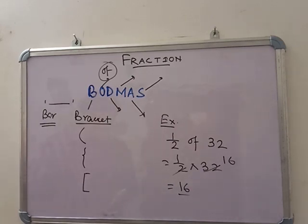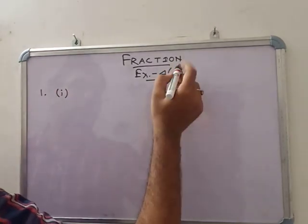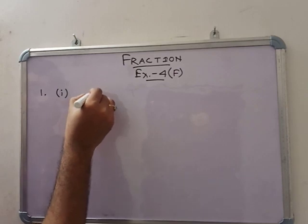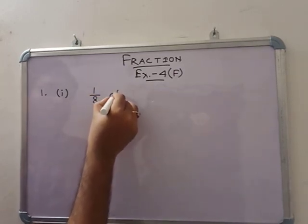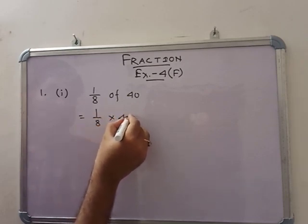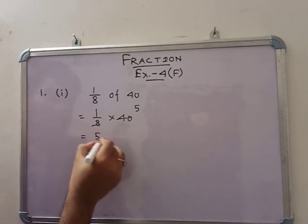Now we are going to Exercise 4F. Number 1: 1 by 8 of 40. That means 1 by 8 into 40. That means 5. So the answer is 5.